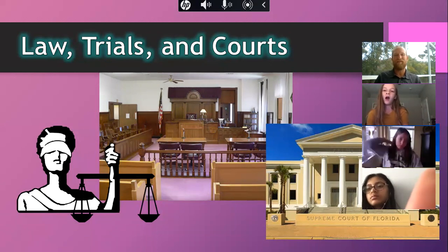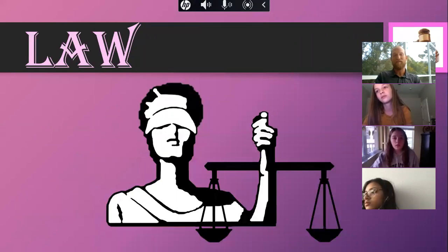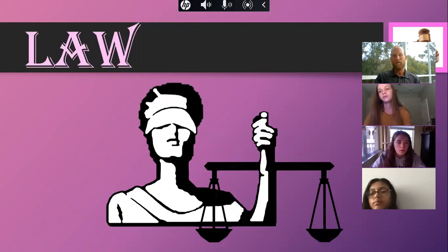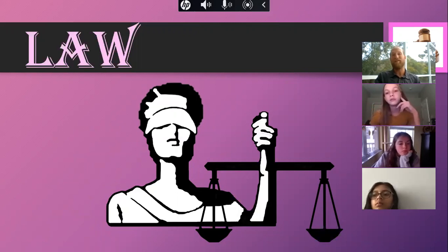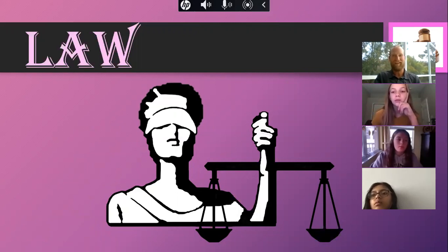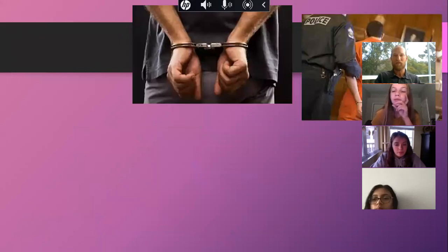We're going to focus on just the two main types of law. Usually when talking about court cases, we're talking about either criminal law or civil law. There are numerous other types - like juvenile law, which covers minors under the age of 18: requirements to go to school, curfews, not being out at 2am. But we're just focusing on the two main types of law.